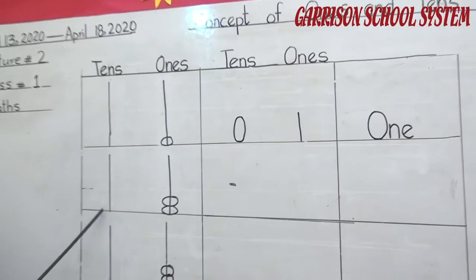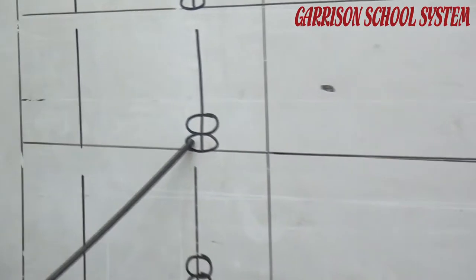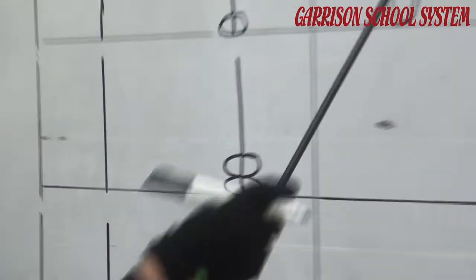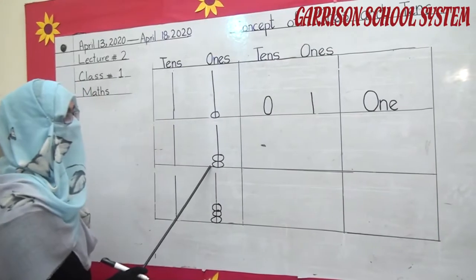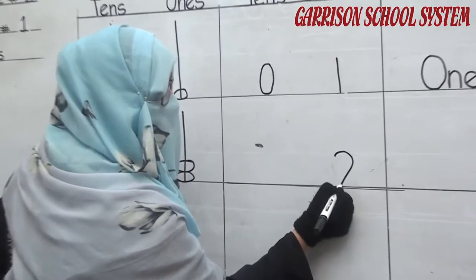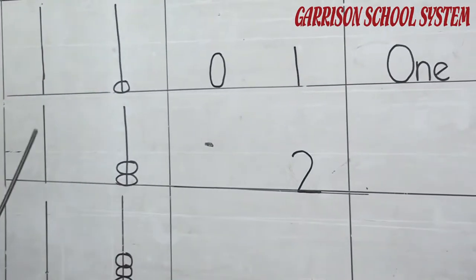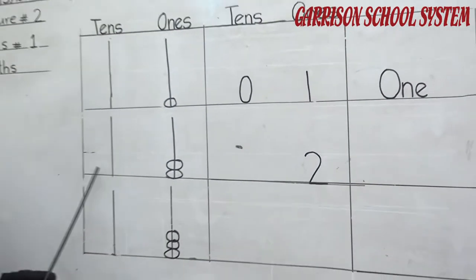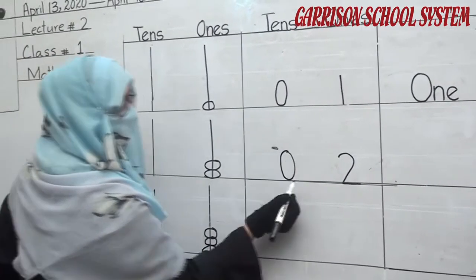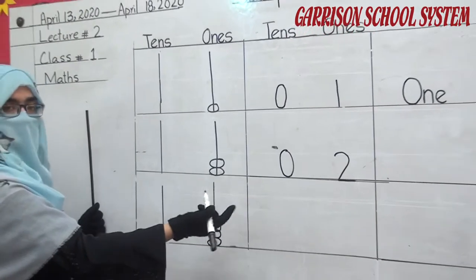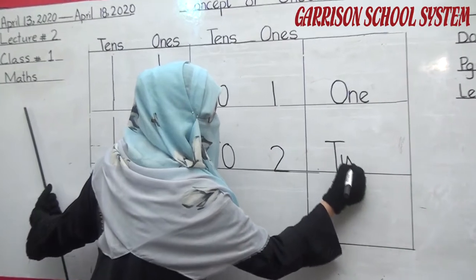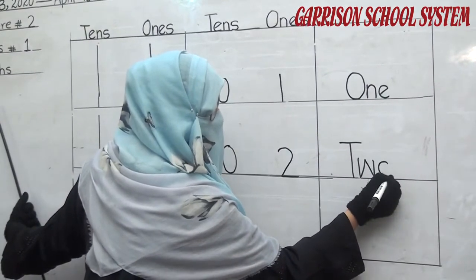Move on to the next box. Here I put two beads — how many beads? Two beads. So in ones we write two. And in tens there is no number, so we write zero. What is the number name of two? T-W-O, 2.